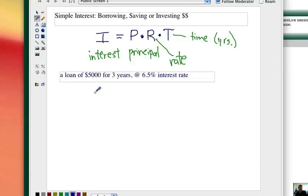Let's take a look at this first situation. You're going to take out a loan for $5,000 for three years at a 6.5% interest rate. Here's the formula.